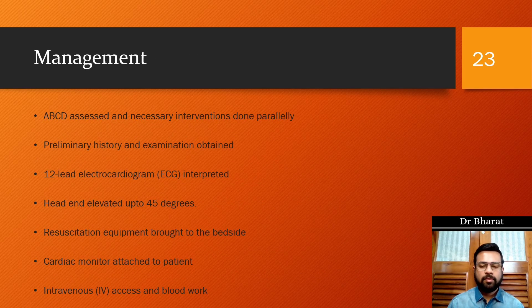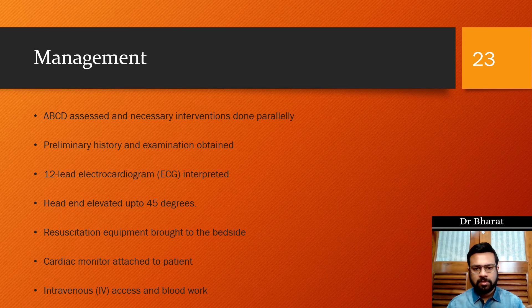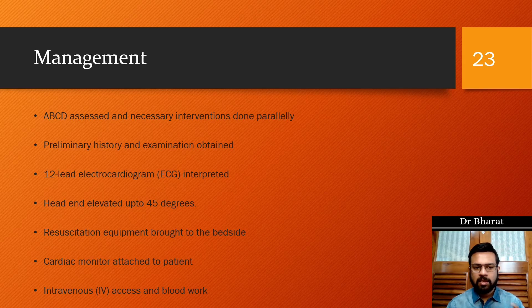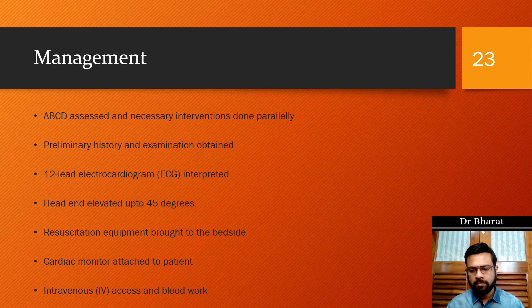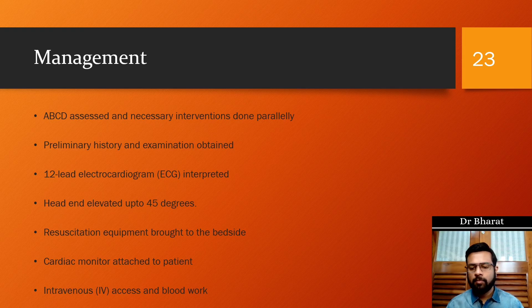Management of a patient presenting to the ER with ACS: management should always follow the ABCD approach, with necessary interventions done in parallel. A 12-lead ECG should be interpreted within 10 minutes of patient arrival. The patient should be positioned comfortably at 45 degrees head elevation. Resuscitation equipment including a defibrillator must be at the bedside, as the patient may develop arrhythmias. A cardiac monitor should be kept on the patient for continuous monitoring, as there is a high chance of developing tachyarrhythmias and bradyarrhythmias. Two IV access lines should be established.